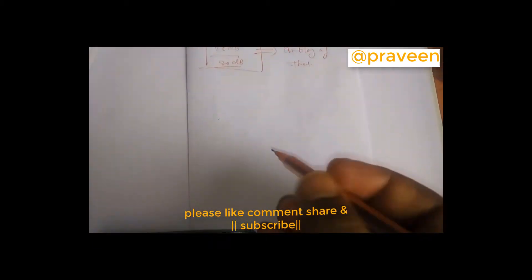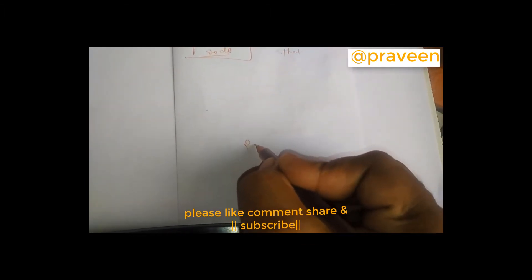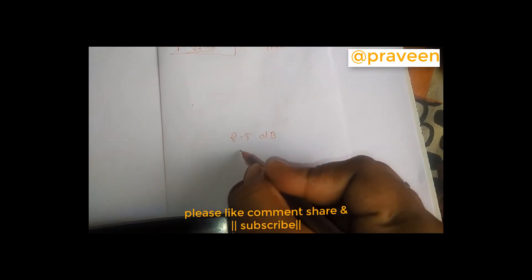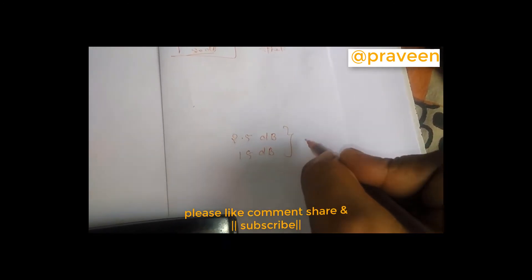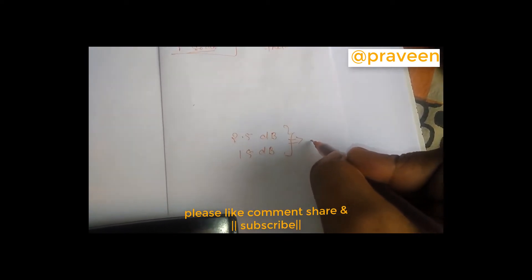Suppose we have numbers like 2.5 dB and 15 dB. These are the questions - you have to find the antilog of these numbers.